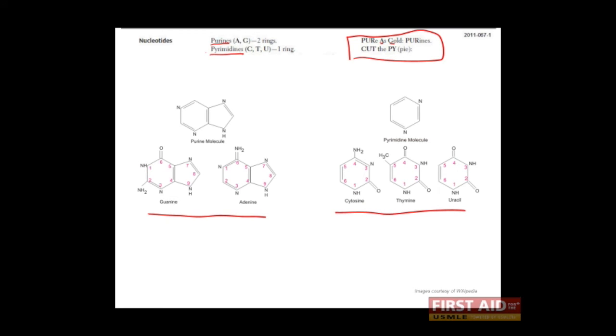Now in DNA, adenine interacts with thymine via two hydrogen bonds. Guanine, on the other hand, interacts with cytosine via three hydrogen bonds. So the G-C interaction is more stable than the A-T interaction, and this makes an important biochemical difference in the DNA.